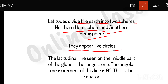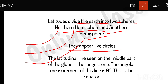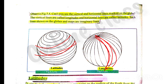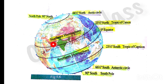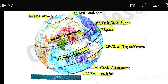They appear like circles. The latitude line seen in the middle of the globe is the longest one. The angular measurement of this line is zero degrees. This is the equator.